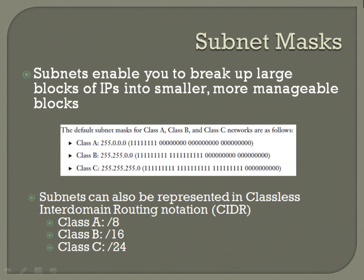Subnets enable you to break up large blocks of IPs into smaller, more manageable blocks. These are the default subnet masks for Class A, B, and C. As I just showed with the 10-dot address in that Class A range, your subnet mask for that is 255.0.0.0, and you can see it matches up perfectly with which IPs would be included.